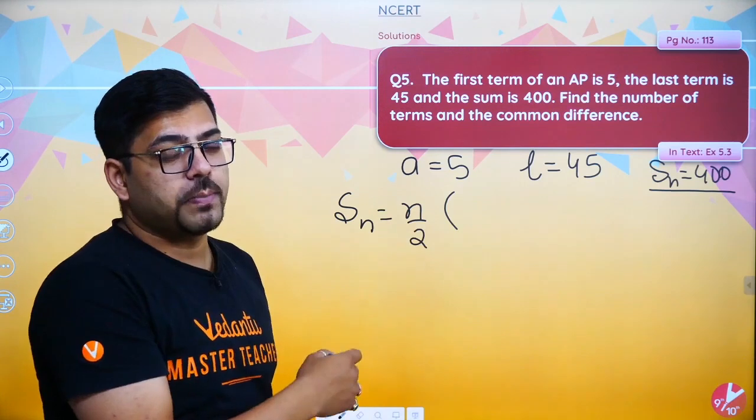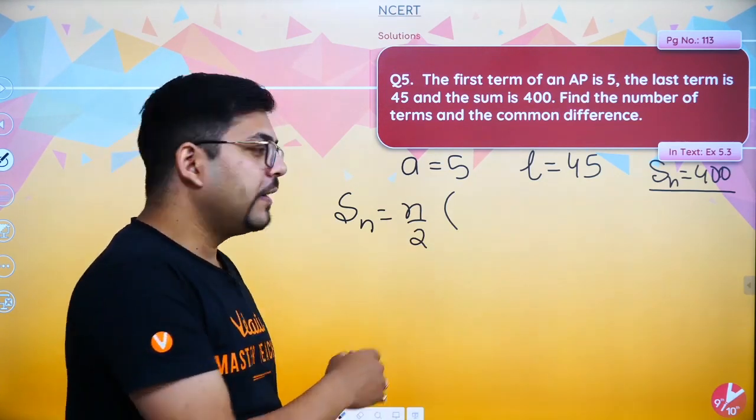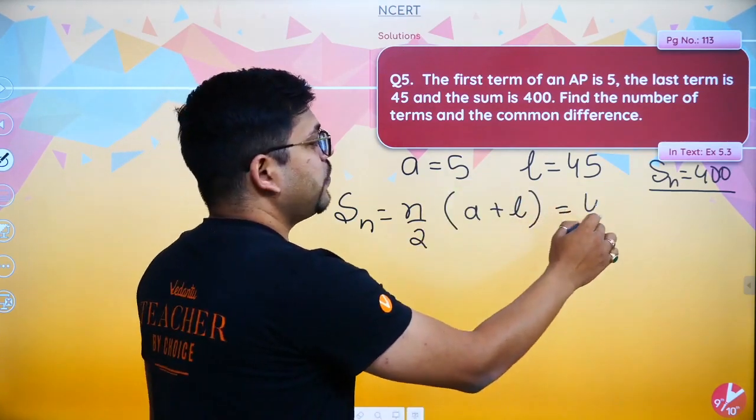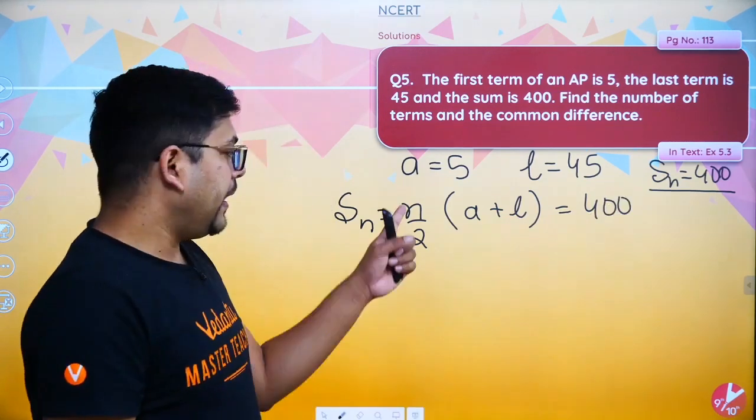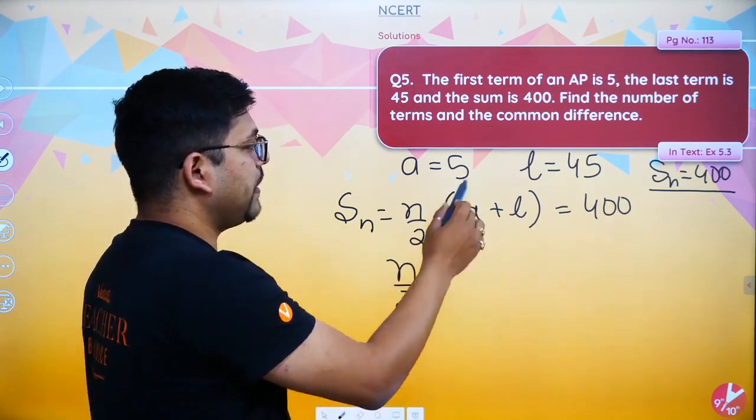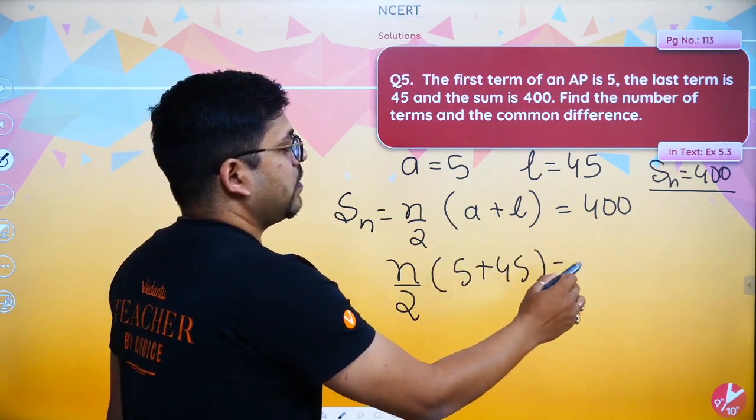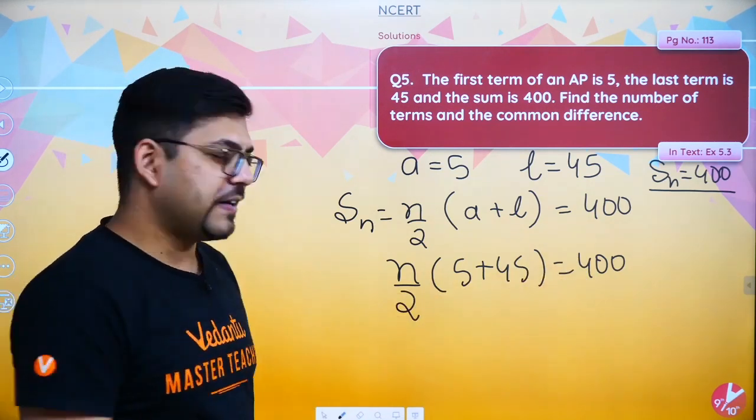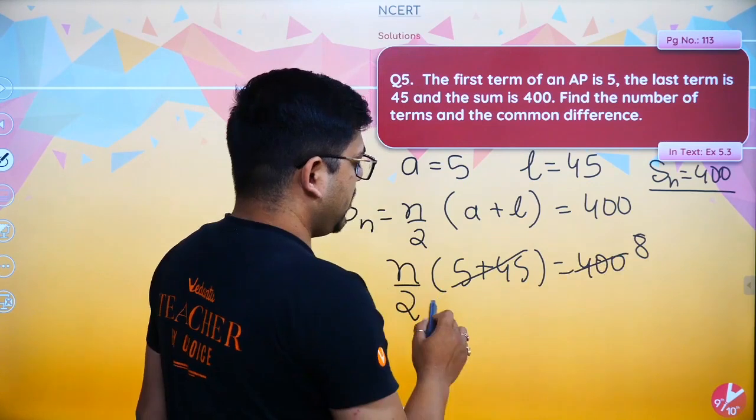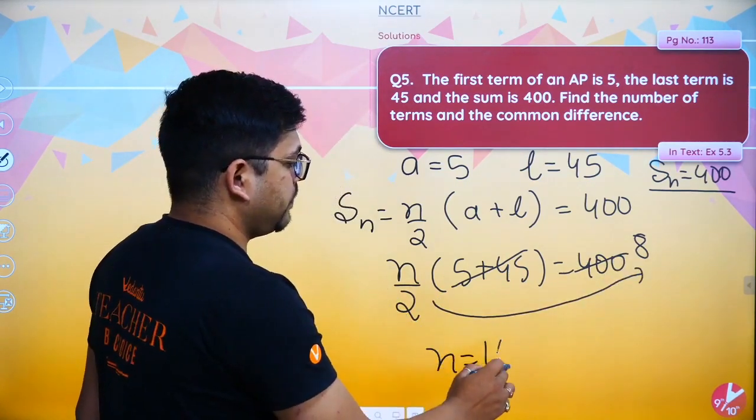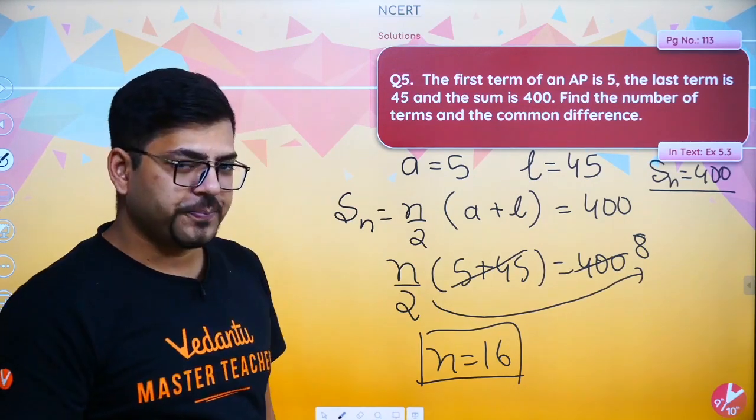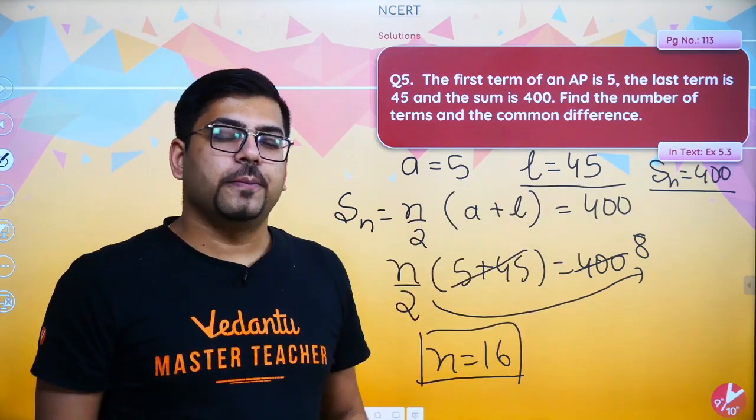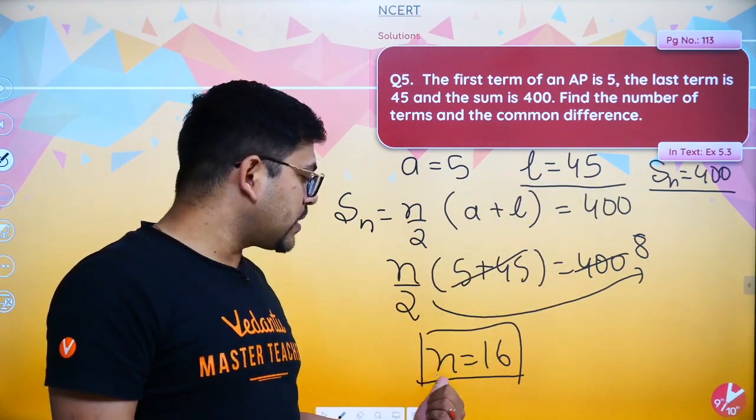Many children are thinking about 2A plus N minus 1 into D, but put A plus L my friend. This is equal to 400. N by 2 into A plus L means 5 plus 45 is equal to 400. Every child knows that 5 plus 45 is 50. So N by 2 into 50 is 400. Therefore 25N equals 400, which gives N equals 16.